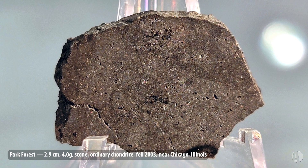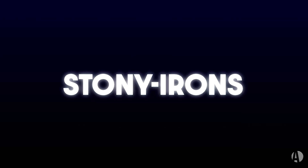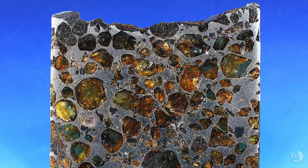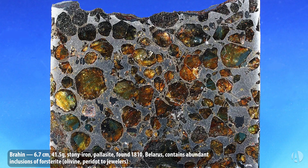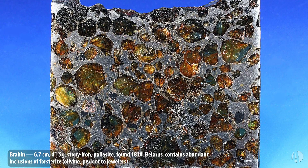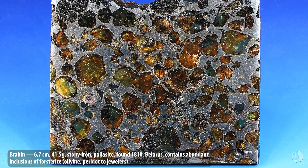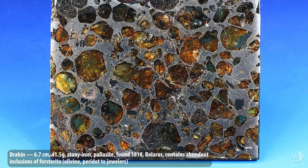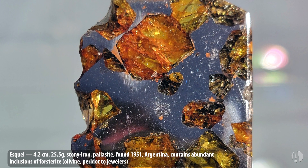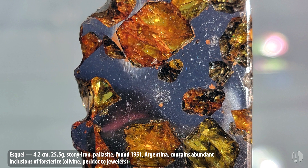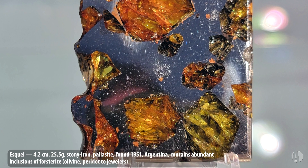Then we get to things that are a little more exotic — the so-called stony irons. I have two examples here that are both so-called pallasites. The first is Brahin, found in 1810 in Belarus, which shows very good examples of inclusions of the mineral forsterite, a yellow-green mineral also called olivine or peridot by jewelers — a beautiful mineral that looks like a window in these sliced pieces. Esquel is another great pallasites example, found in 1951 in Argentina, and is often thought to be the most beautiful of the pallasites.